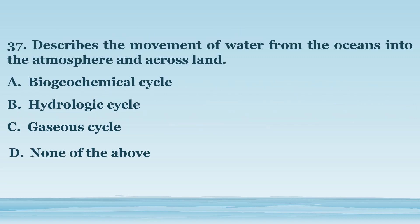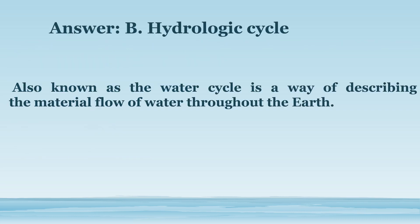Number 37. Describes the movement of water from the oceans into the atmosphere and across land. A. Biogeochemical cycle. B. Hydrologic cycle. C. Gaseous cycle. D. None of the above. The answer is letter B. Hydrologic cycle. Also known as the water cycle, is a way of describing the material flow of water throughout the earth.